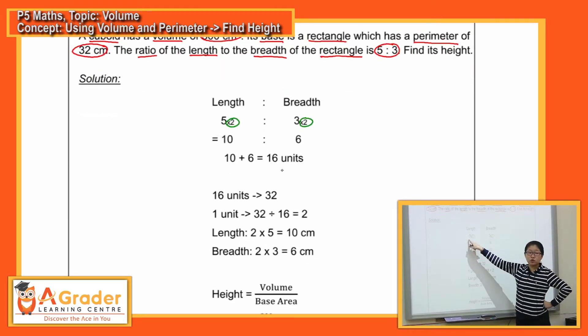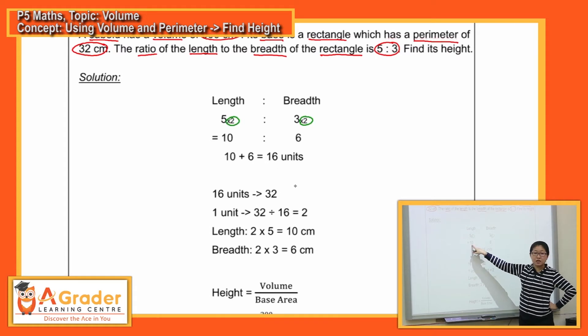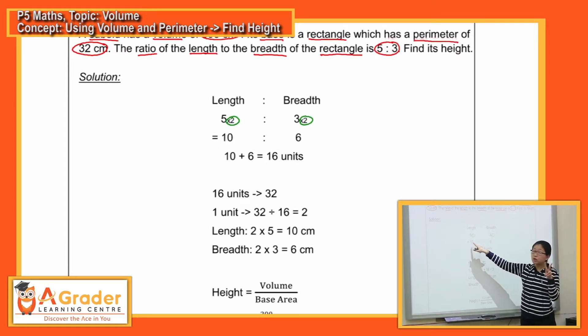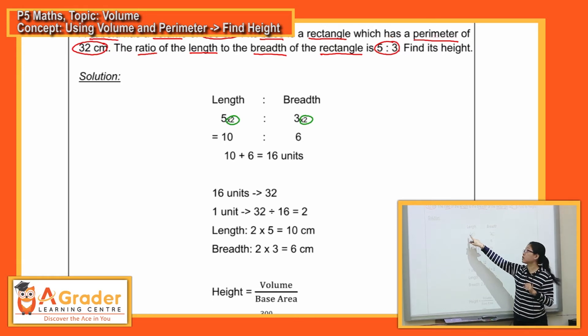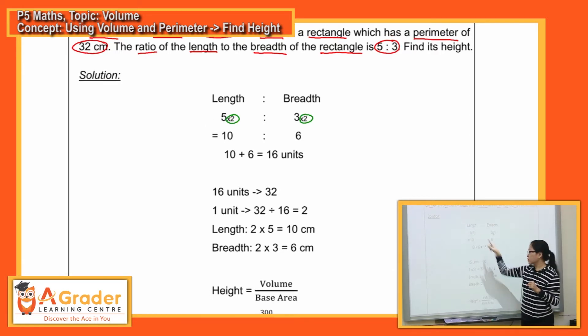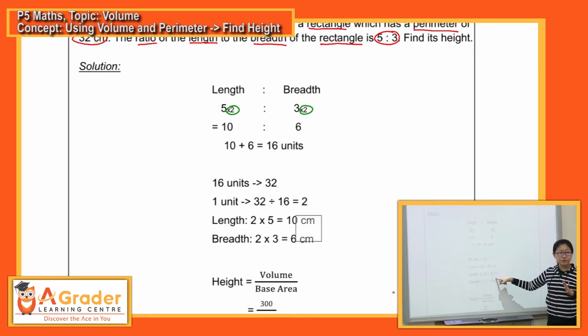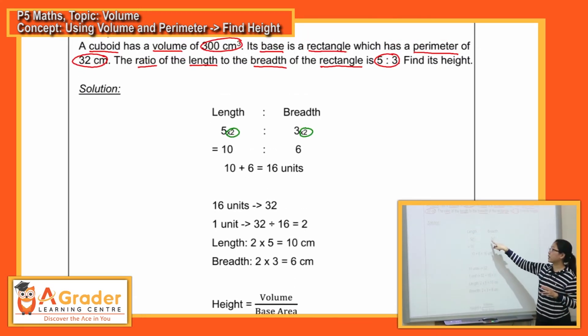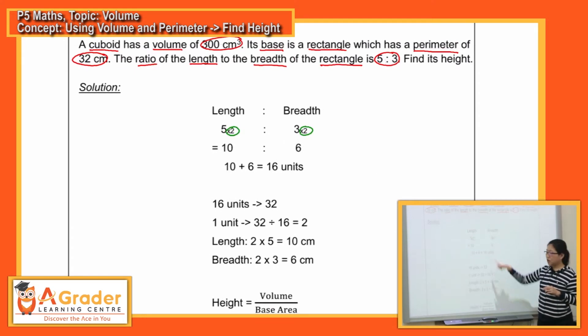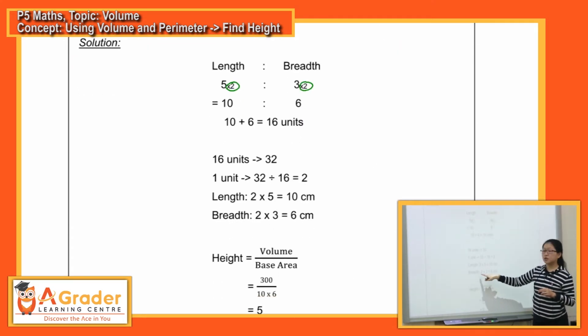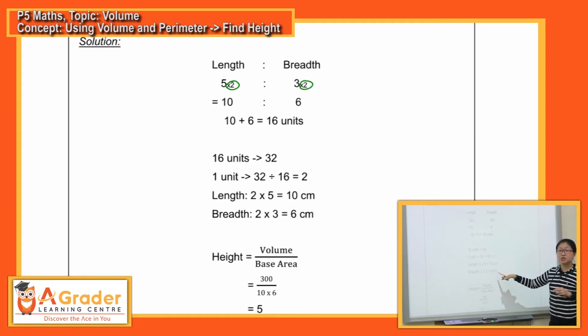So length, because it's 5 unit, take note, don't use the 10. 10 is for double length. So we should use length only, one of the length, which is 5. So 5 unit times the 2, we will get 10 cm for the length. Then for the breadth, the same thing, we use the units of 3. So 3 units times by the 2 again, we get the 6 cm, understand?